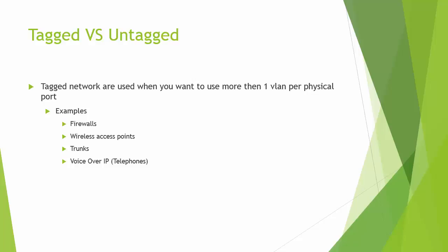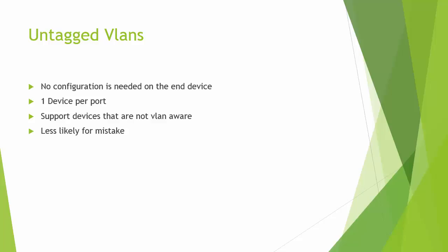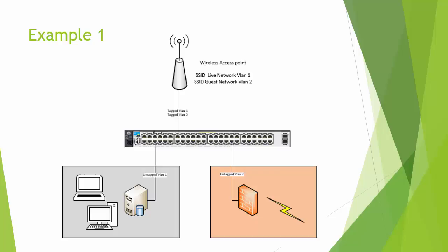We'll cover trunks in the practical demonstration. To summarize untagged VLANs: there's no configuration needed on the device end, only one device per port, and the device doesn't have to be VLAN aware. There are many devices you can't configure VLANs on — for instance, Dell SonicWall SSL VPN appliances are not VLAN aware, so they'd have to go on an untagged VLAN. Untagged VLANs are much less likely to result in mistakes and are simple to set up.